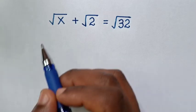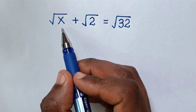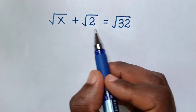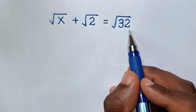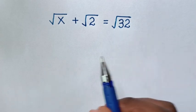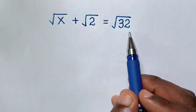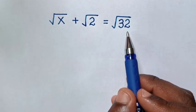Hello. How to solve square root of x plus square root of 2 is equal to square root of 32, to find the value of x from this equation.